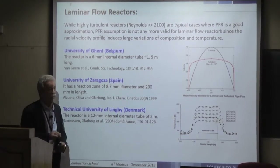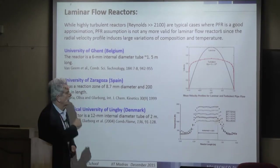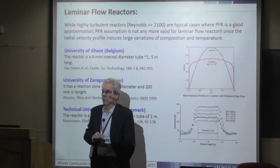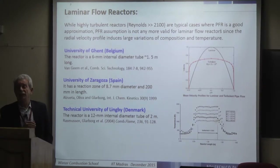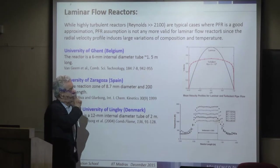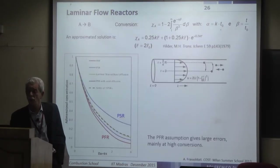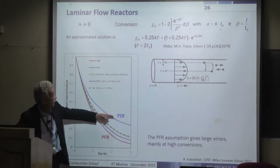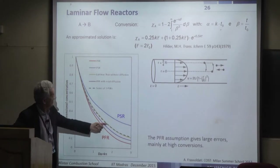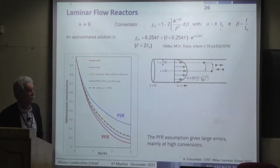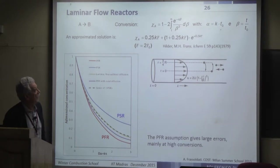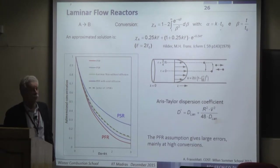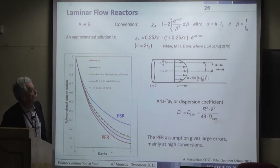For the laminar flow reactor, there is a clear velocity profile inside the tube giving different residence times for different streamlines. The results are intermediate between a perfectly stirred reactor and a plug flow reactor. This laminar flow behavior can be accounted for by introducing an equivalent dispersion coefficient.